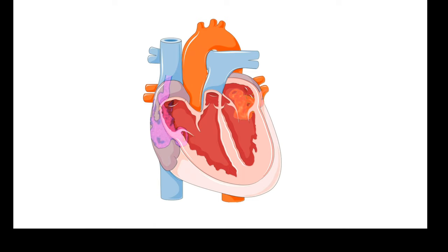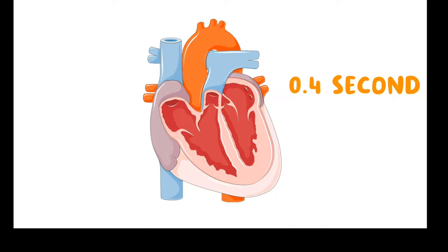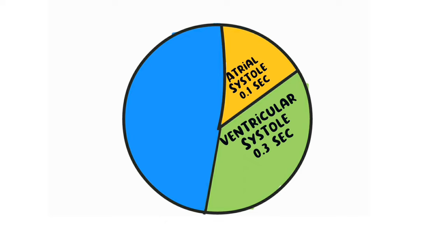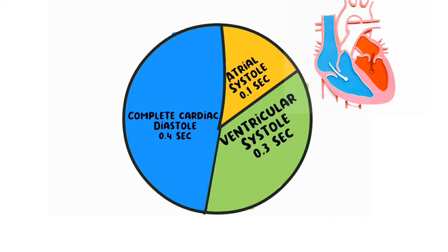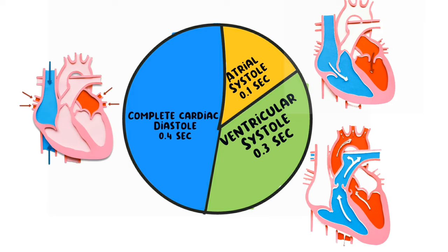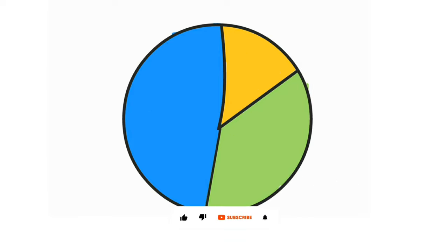Complete cardiac diastole takes about 0.4 second. Looking at a pie chart to understand the cardiac cycle: one cycle equals one heartbeat, and we heartbeat 72 times per minute, meaning these three phases occur in each heartbeat. In atrial systole, blood is pushed from the atrium to the ventricles; in ventricular systole, blood goes to the lungs and the system; and in complete cardiac diastole, the heart is at a resting state and the atrium refills.